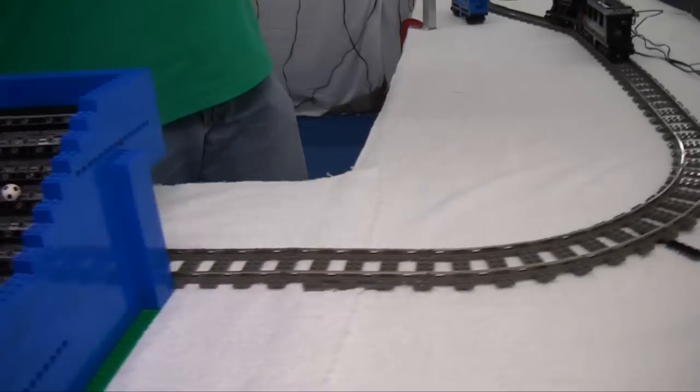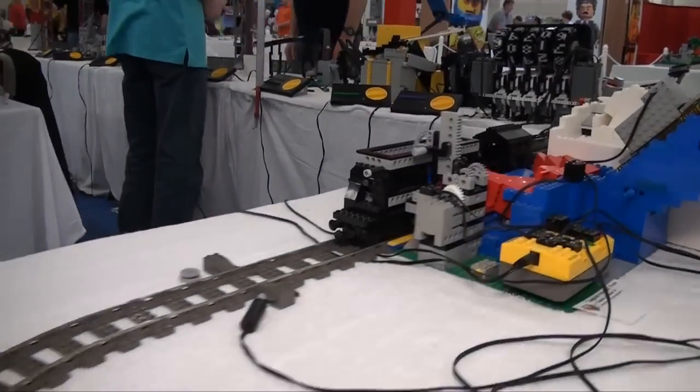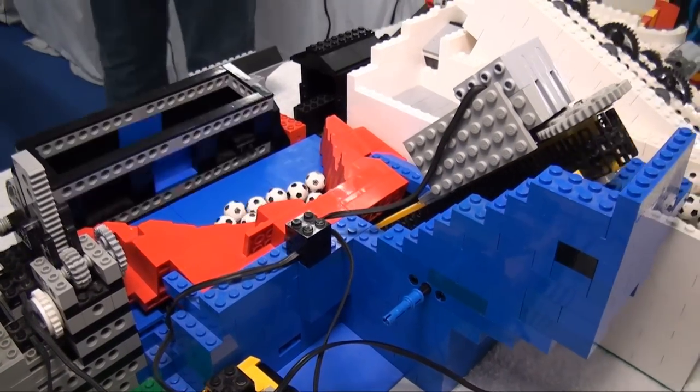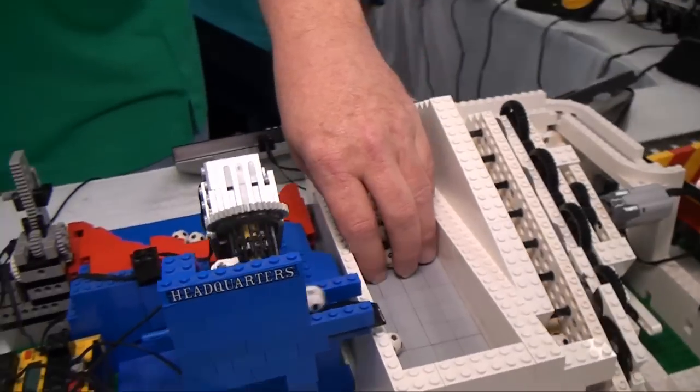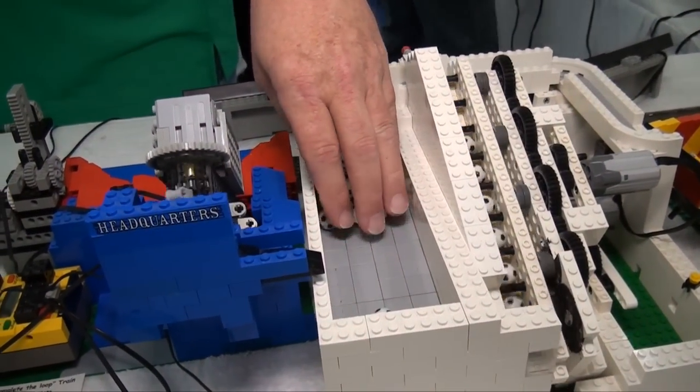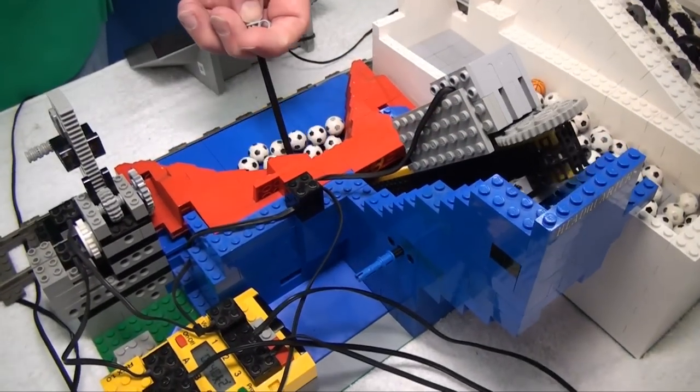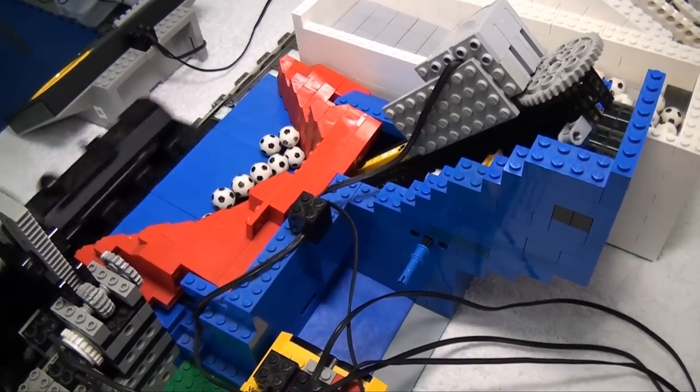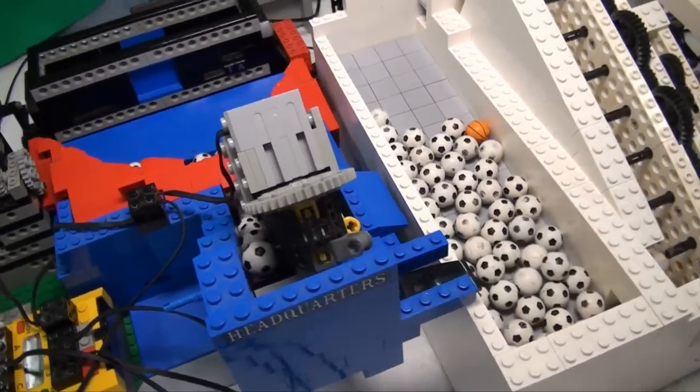So once the balls are on the train, you go around the corner and over here to the unload module. And I see you've got a jam up here. That does happen. So this is one of the problems with the unload module, is the balls do find a way to lock. They will always do that. Even though they're being bounced around, they still find a way to stop moving.